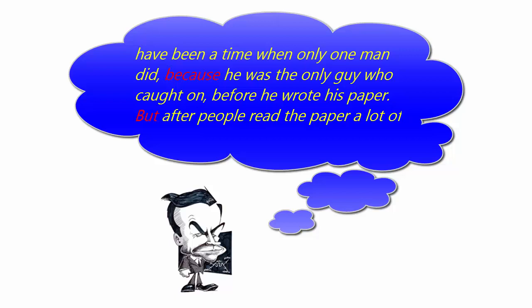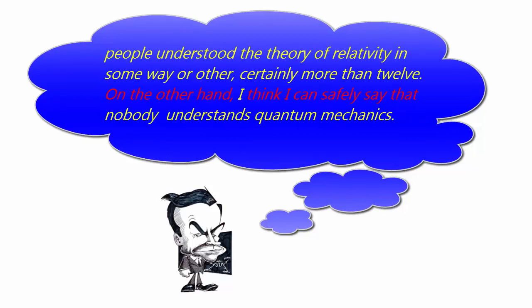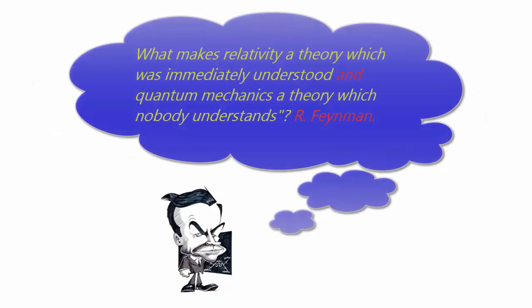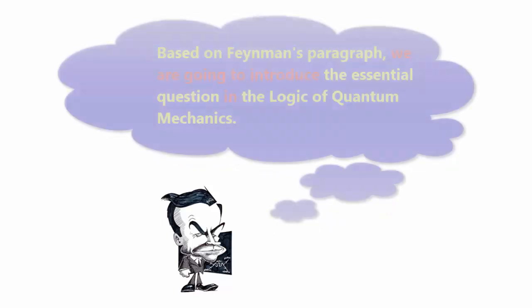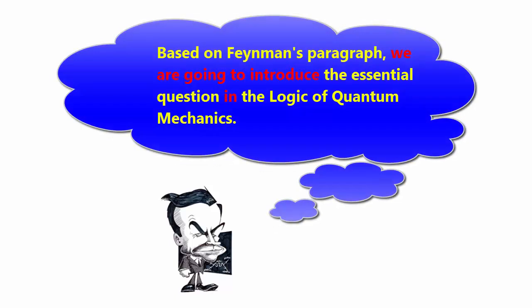People read the paper, a lot of people understood the theory of relativity in some way or other, certainly more than 12. On the other hand, I think I can safely say that nobody understands quantum mechanics. What makes relativity a theory which was immediately understood and quantum mechanics a theory which nobody understands? Based on Feynman's paragraph,